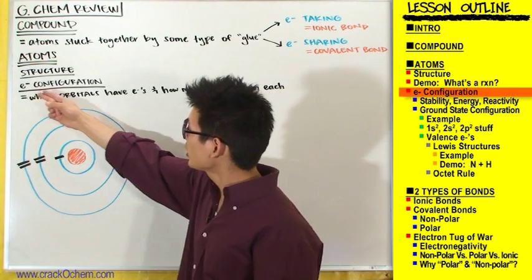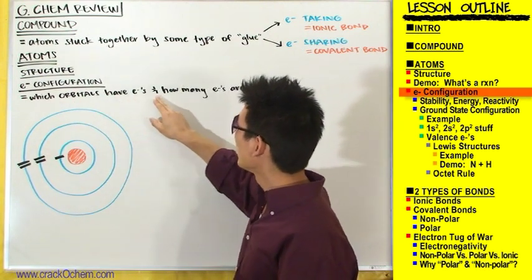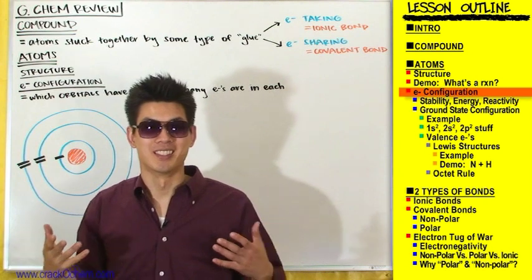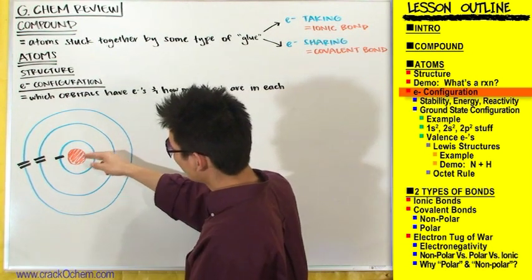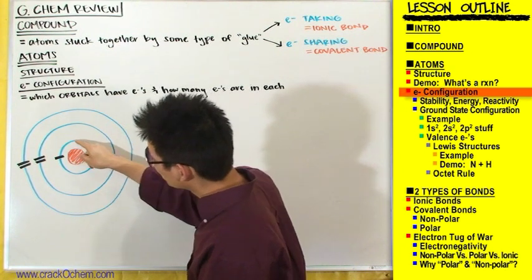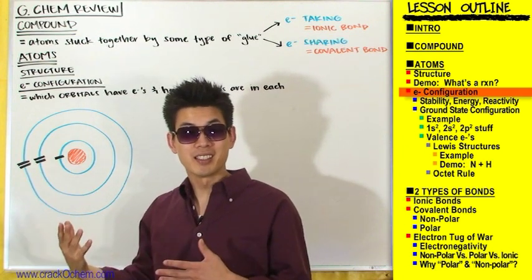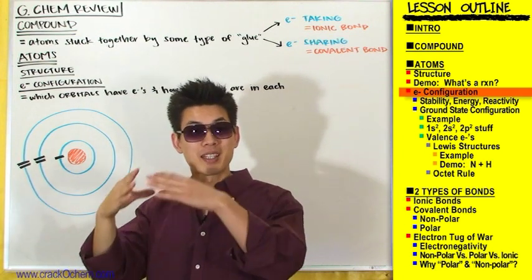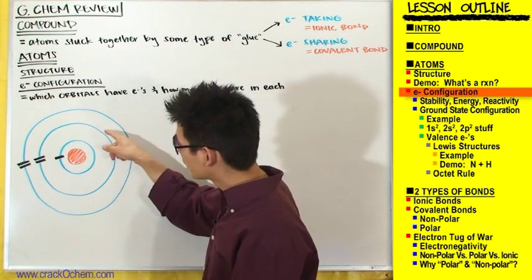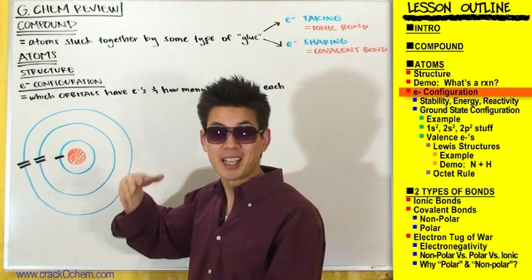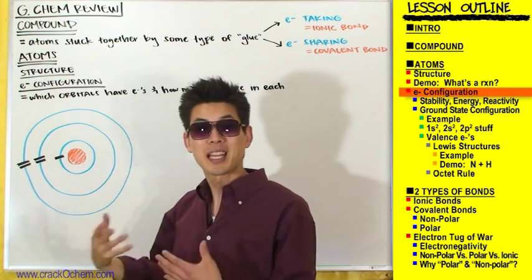Electron configuration refers to which orbitals have electrons and how many electrons are in each orbital. We have a diagram of our atom with the nucleus in the center, blue electron rings grouped into energy level one and energy level two. What I want you to do is fill out the green rectangular orbitals — show how many orbitals should be in each electron ring and what type they are: s or p.